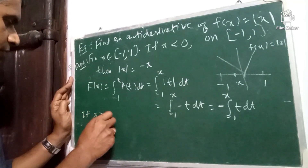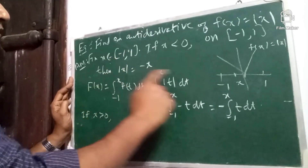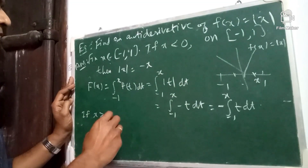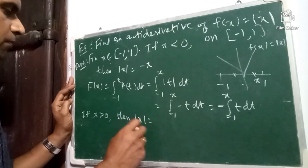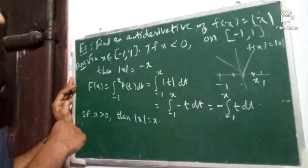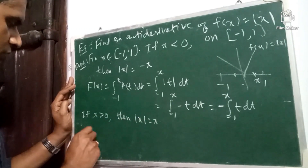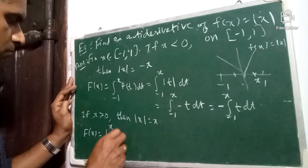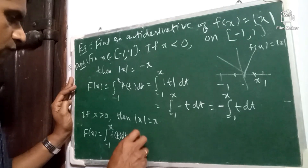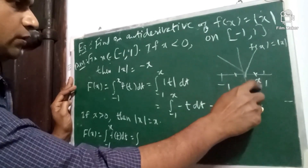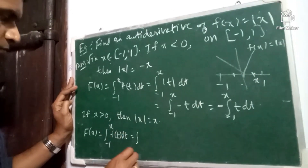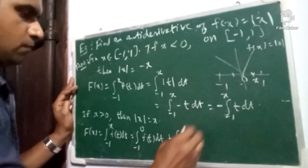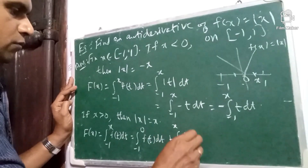Now, if x is greater than 0, we are fixing an x in the interval minus 1 to 1, so x may be positive. If x is positive, mod x is x. We will construct F of x, so F of x is equal to integral minus 1 to x of f of t dt. This equals integral minus 1 to 0 of f of t dt plus integral 0 to x of f of t dt.